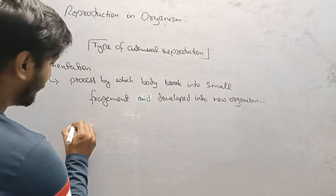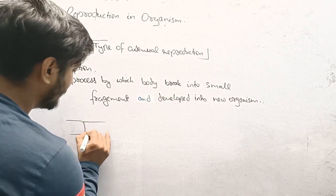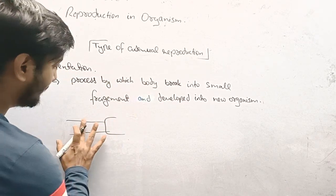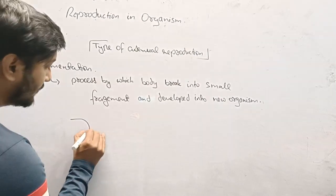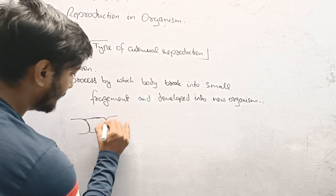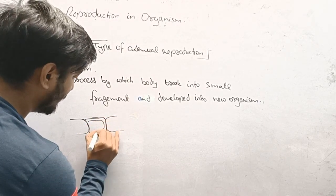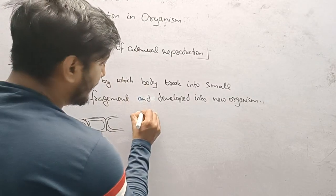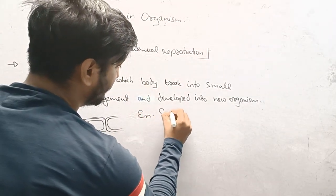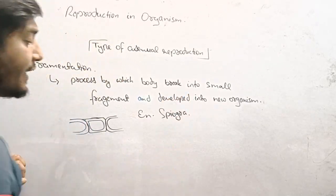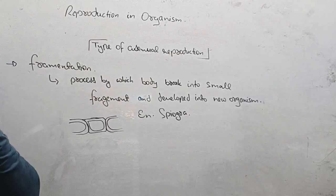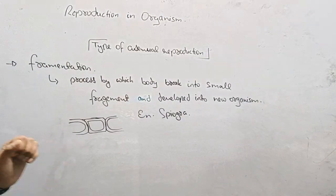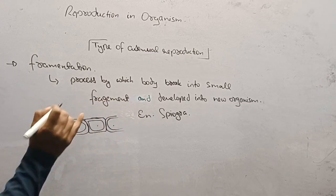In this type of asexual reproduction, the body of the organism gets divided. We can see this in the case of Spirogyra. In the case of Spirogyra, the fragments which are broken off by incident develop into new organisms. This is seen in Spirogyra and is another type of asexual reproduction.